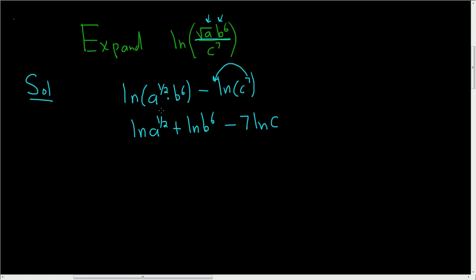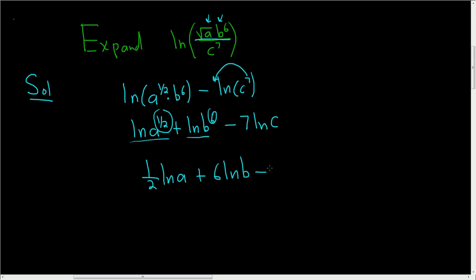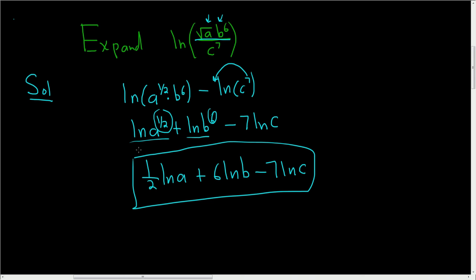To finish, we'll just use the power rule on these first two logs. So this is 1 half natural log of a plus 6 natural log of b minus 7 natural log of c. And that is it.